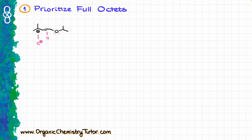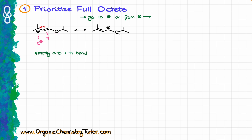When drawing resonance structures, one important fundamental principle is that if I have charges, I'm either going to be going towards the plus or going from the minus charge. Since I have a carbocation next to a pi bond, this gives me an empty orbital plus a pi bond pattern, so I move those electrons from the pi bond towards my carbocation, giving me the first resonance contributor. Now I have a carbocation next to an element with electron pairs — my oxygen — so I can draw the next resonance contributor by taking my electrons and moving them towards my carbocation, giving me another contributor.